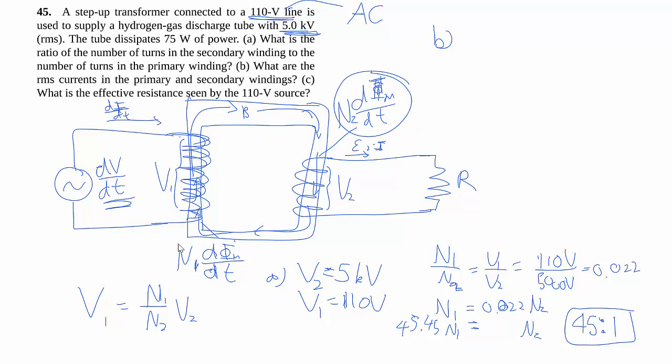For part B, they want the current. This RMS thing, don't worry too much about it. It's just something related to AC, your Ohm's law still works basically the same way, even in AC. So then to work out the current, we can use our power. The power in the secondary part is simply V times I, right? We know V, we know I. So in order to find out I, we just divide through because we're given the power and we're given the voltage. So we have 75 watts divided by 5000 volts. And that's your secondary part, I2.